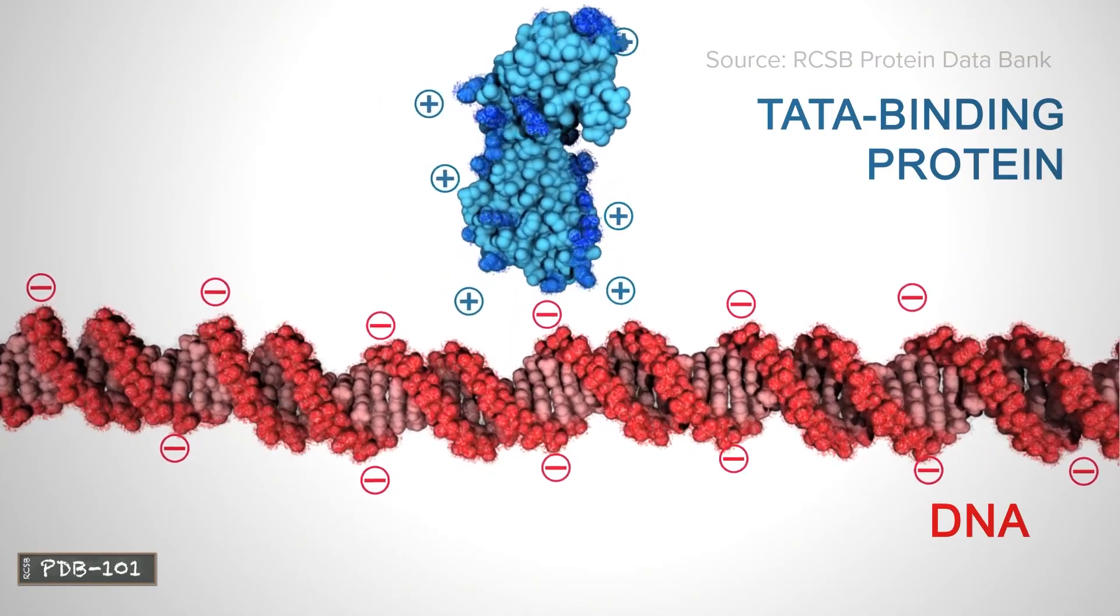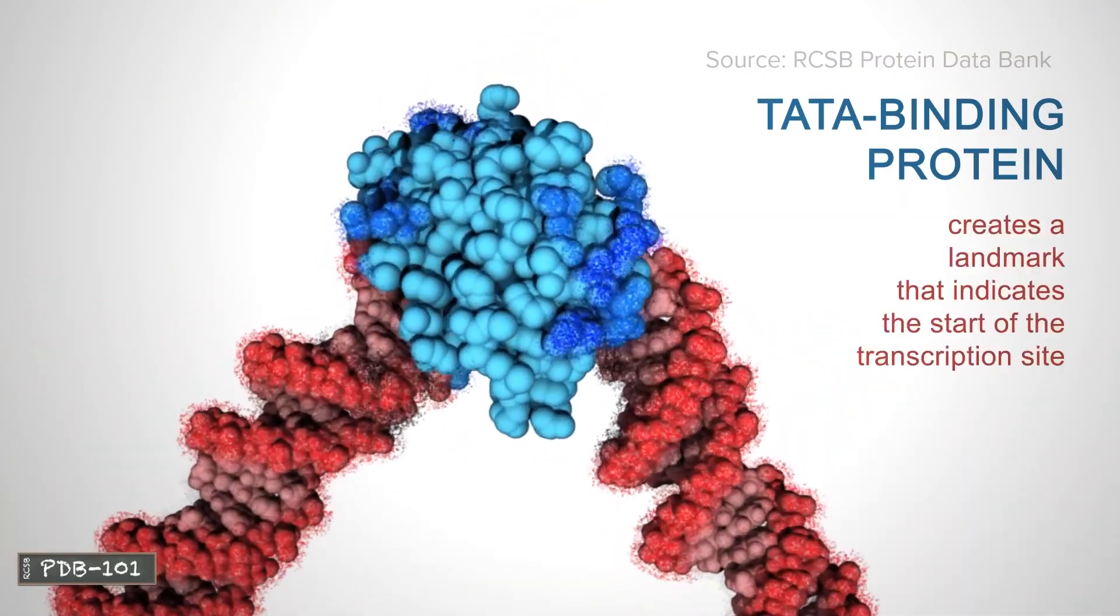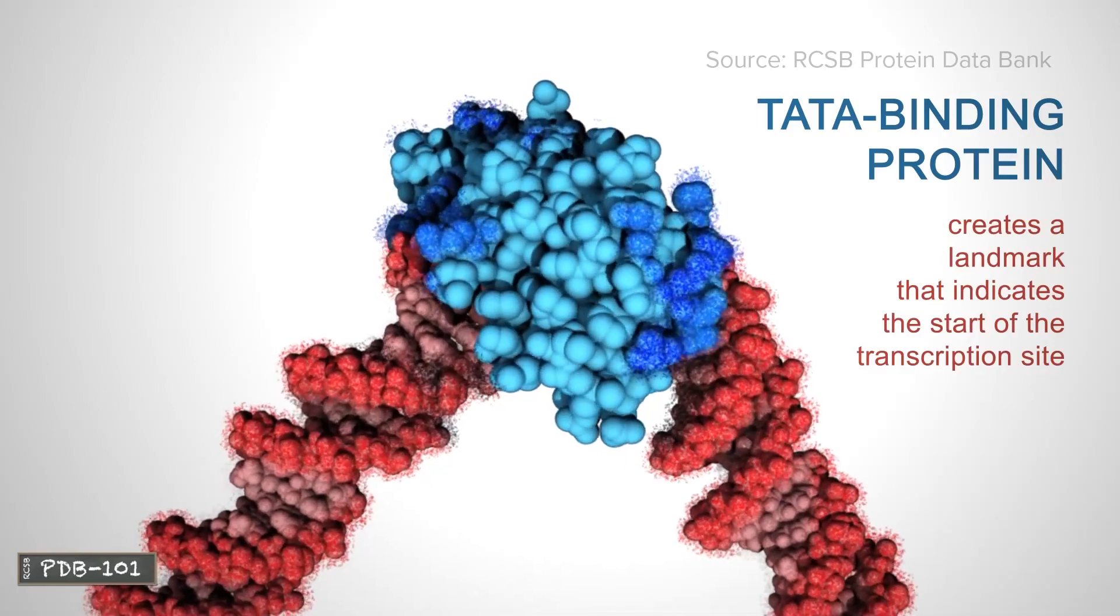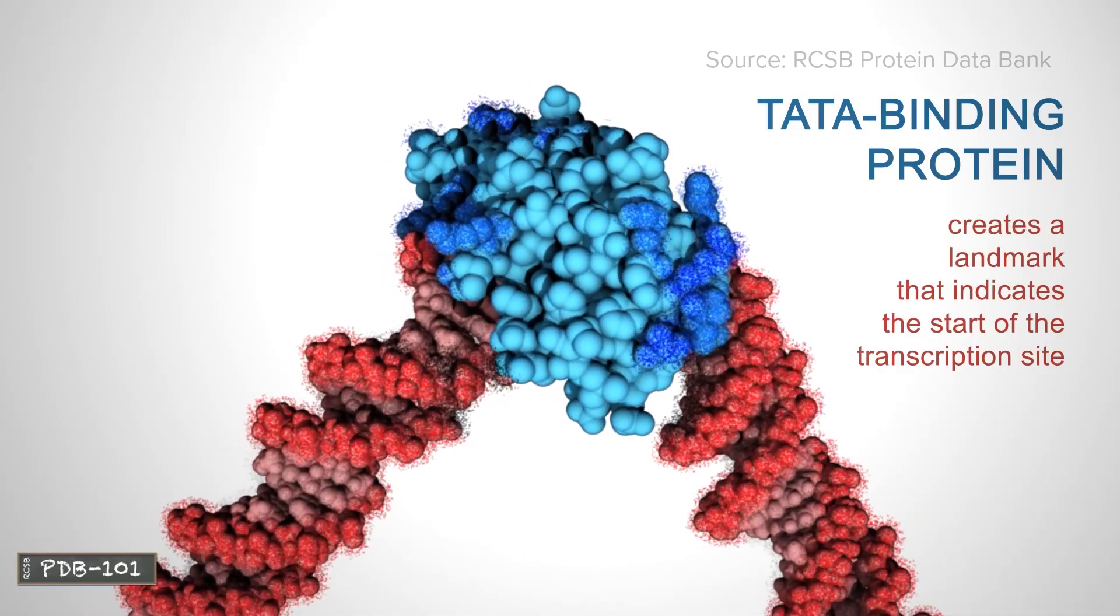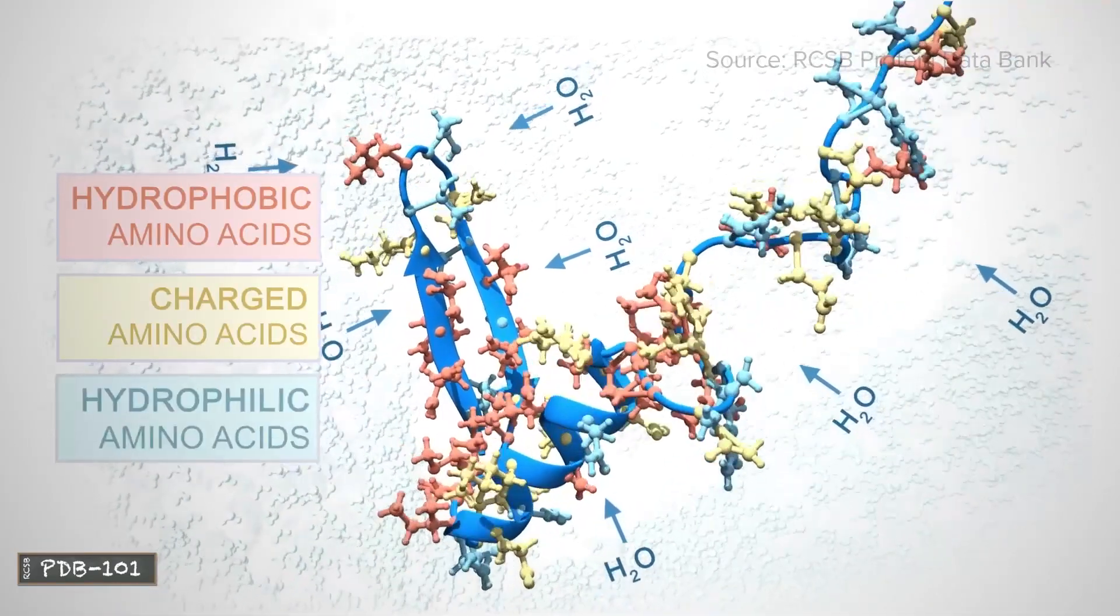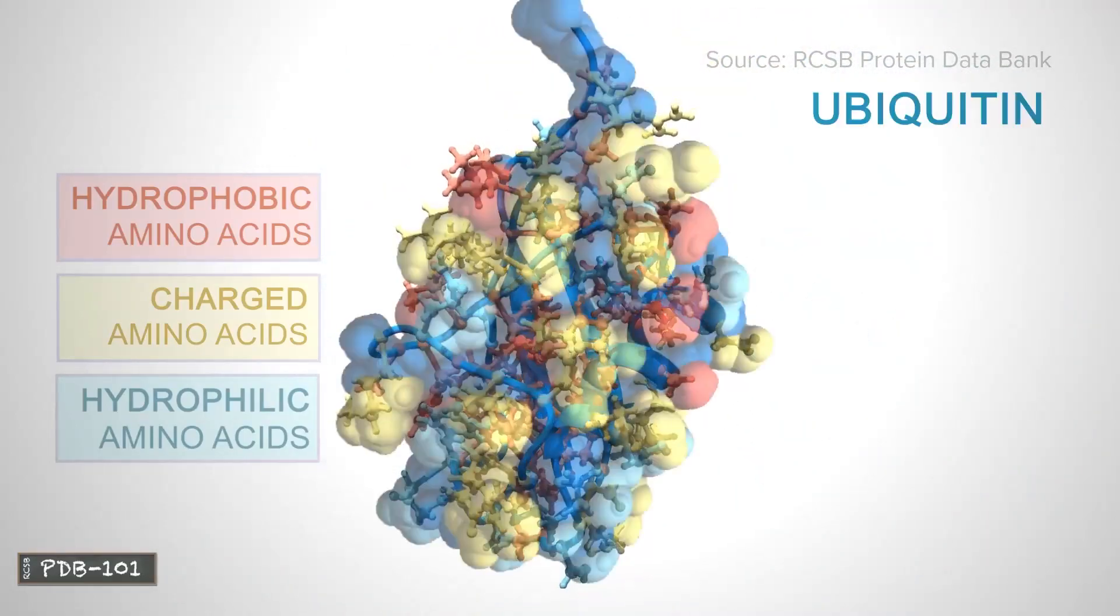Proteins accomplish these functions by binding with other proteins or chemicals, the occurrences and whereabouts of which are determined by the 3D structures of the proteins, which are in turn determined by the sequence of different amino acids that comprise them.